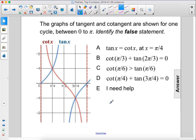The graphs of tangent and cotangent are shown for one cycle between 0 to π. Identify the false statement.